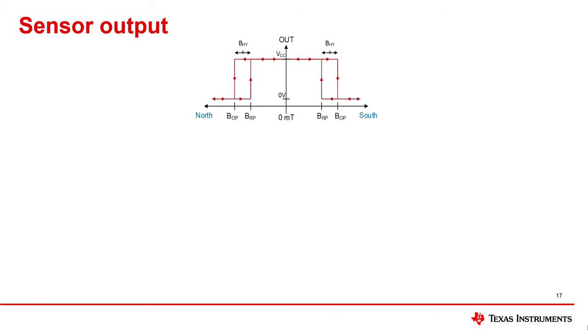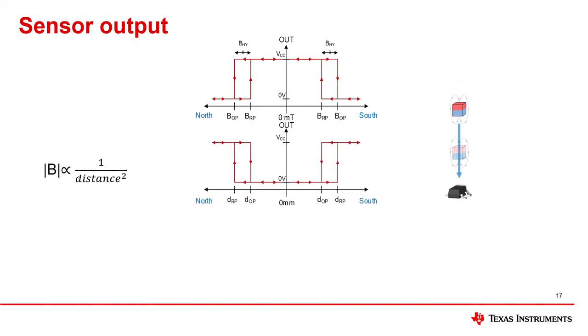Typically, in an omnipolar switch data sheet, you will see an active low plot that indicates the sensor output will transition low when the measured magnetic flux exceeds BOP, and will transition back to high when the measured magnetic flux drops below BRP. B-HIS will define the difference in the magnitude between BOP and BRP. From this, we can create another general behavior diagram to help us anticipate what behavior to expect in our operating conditions.